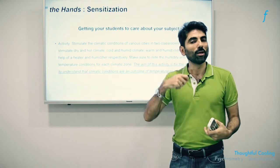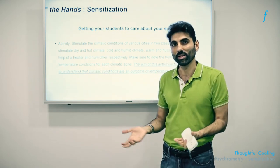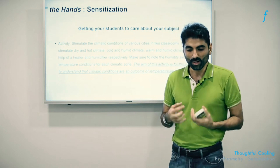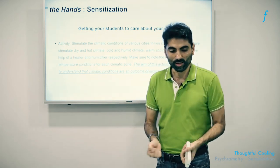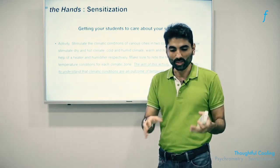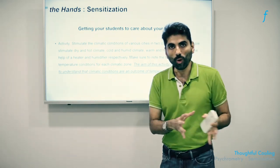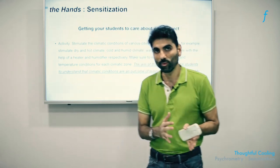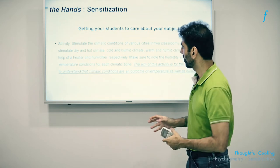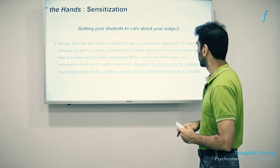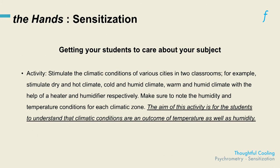Get the students to experience these rooms and try to estimate which city this feels like. This will give them a real kinesthetic and tactile understanding of the psychrometric chart. It won't just be a two-dimensional sheet of paper — they will actually be able to imagine where they are on the psychrometric chart, whether they are moving to the left or to the right depending on which room they are in.